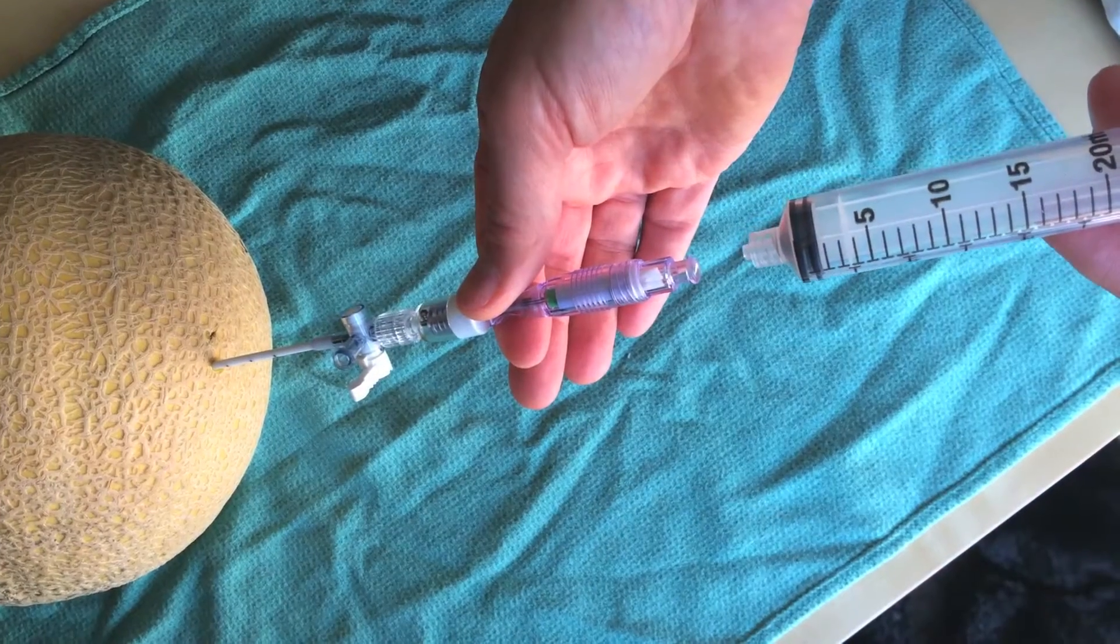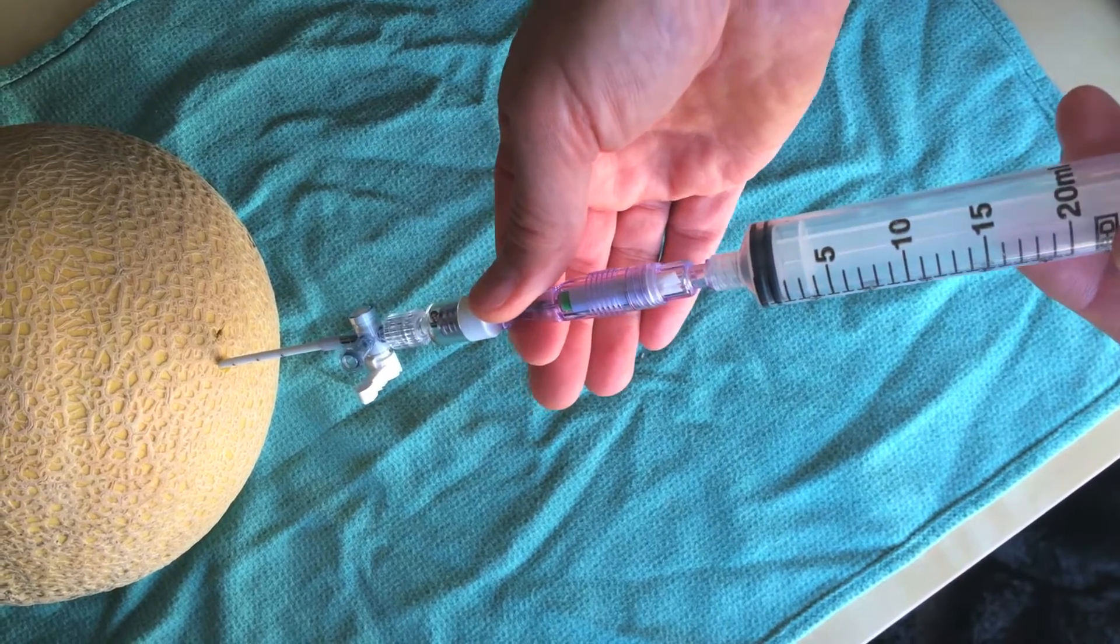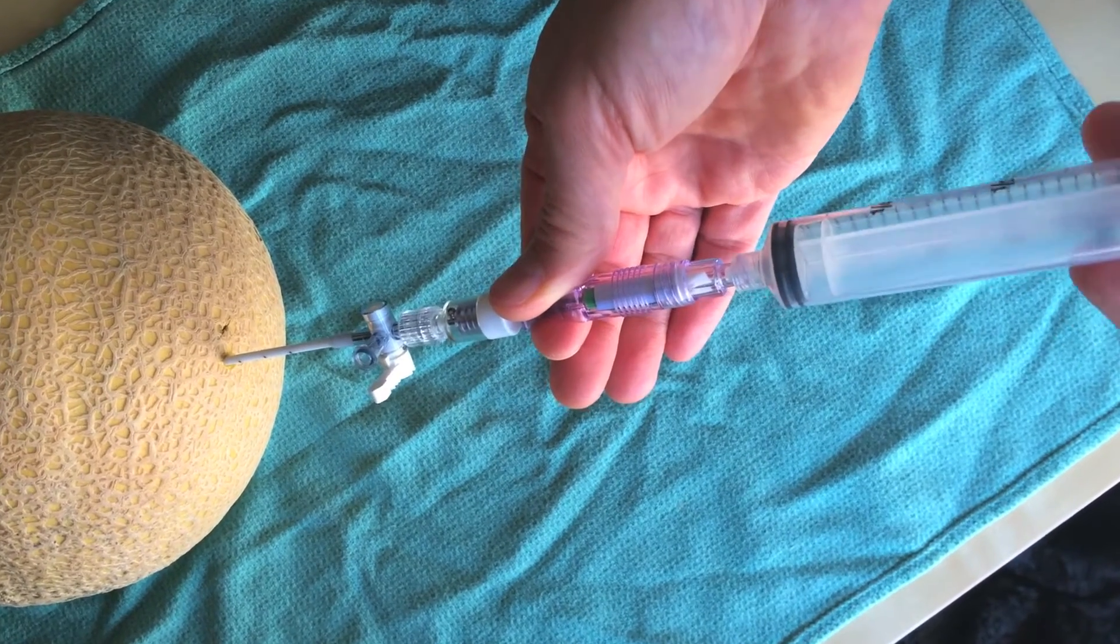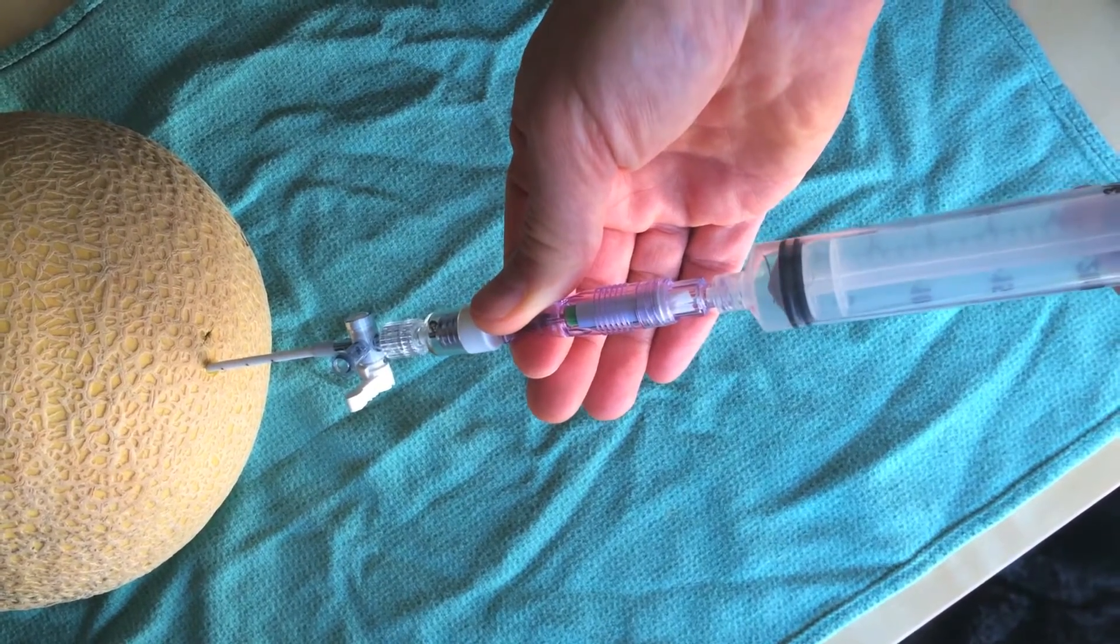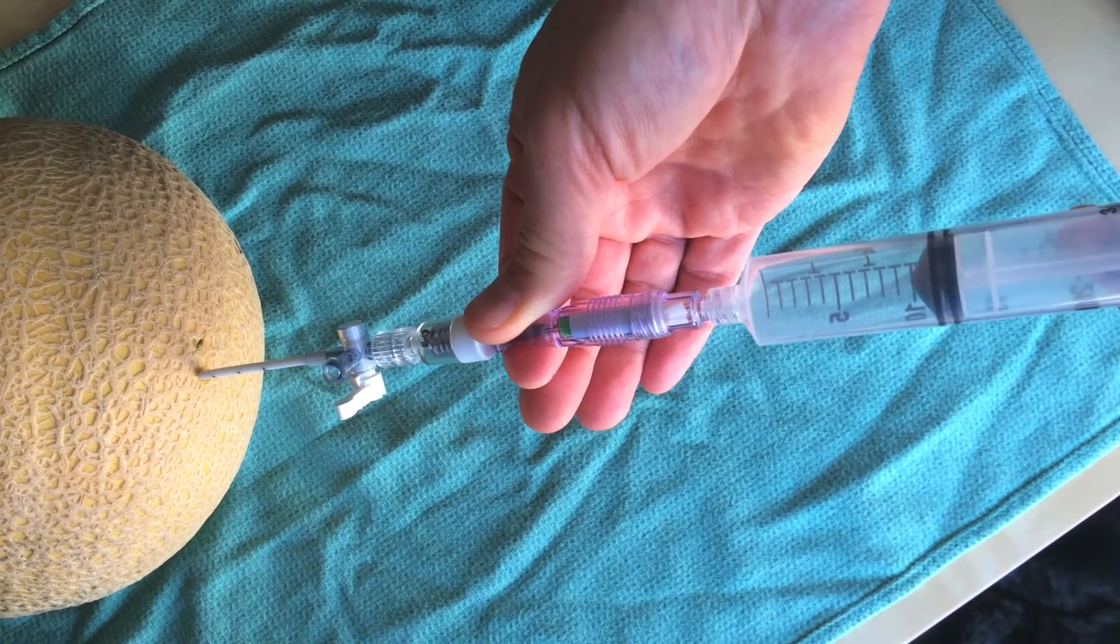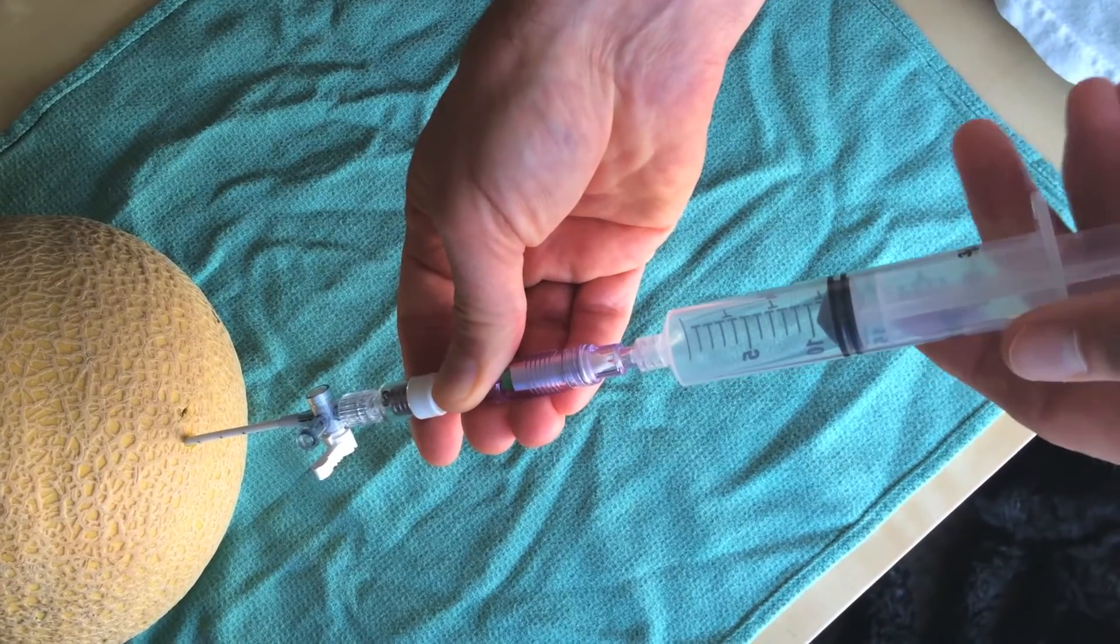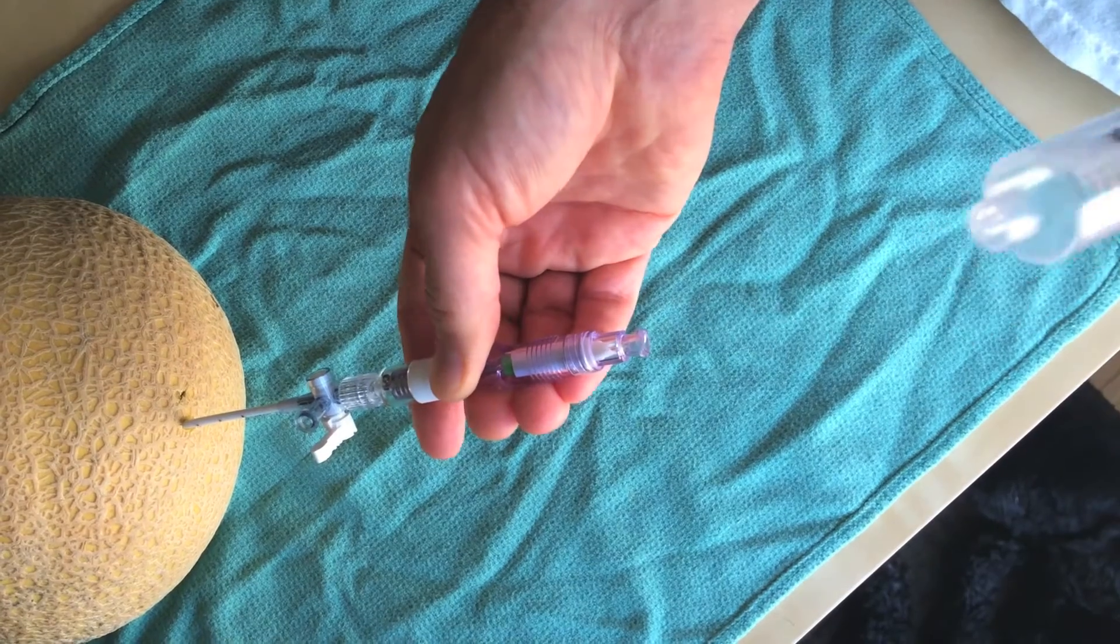To confirm that you're in the right location, attach a syringe to the other end of the Turcal needle and aspirate to confirm ascitic fluid. You can send any aspirated fluid to the lab for analysis.